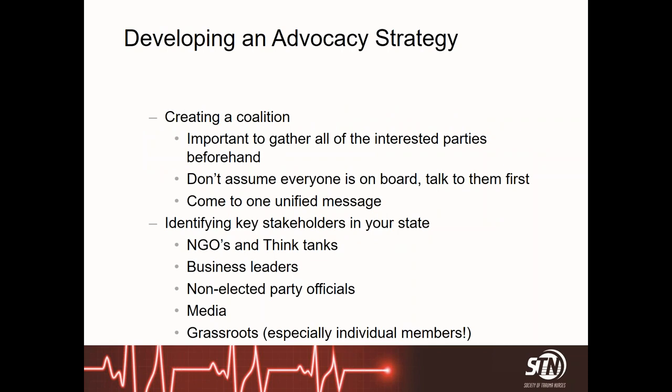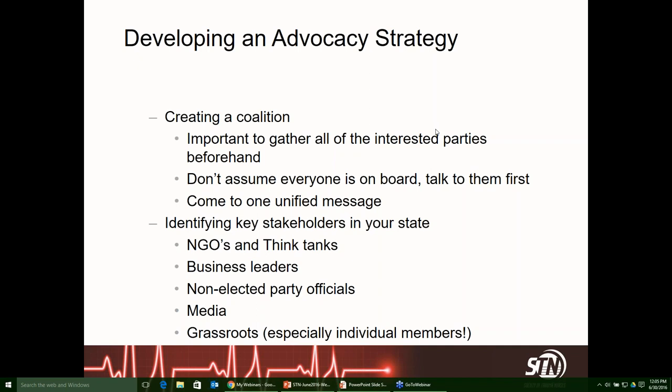So where do we start? You have an issue — we'll take public safety and injury prevention as an example. The first step is creating a coalition. You want to gather all the interested parties beforehand: doctors, hospital associations, other medical professionals that may have skin in the game. Get those folks together, talk to them about the issue, and try to come to a consensus. Don't assume that an organization or group may be on board — they may have conflicts. It's important to get that out in the open first and come to one unified message.